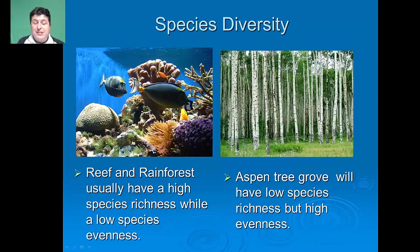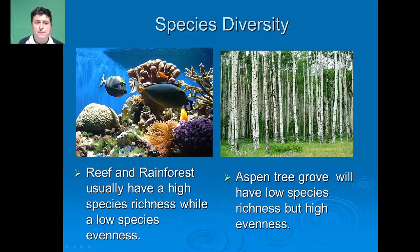Reefs and rainforests typically are like sample A — they have a high species richness with a low species evenness. It's very diverse, but there are going to be some species present in great numbers while others are in small numbers. Whereas an aspen tree grove will have a lower species richness, just like sample B, but a high evenness — all of the aspen trees are equal in abundance.